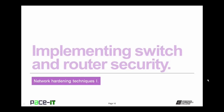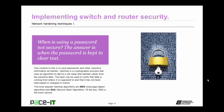Let's conclude with implementing switch and router security. When is using a password not secure? When the password is kept in clear text. One solution is to save passwords and other sensitive information as hashes. Hashing is a cryptographic process that uses an algorithm to derive a set value — the hashed value — from the sensitive data. The hash can be used to verify that data is coming from where it is supposed to and has not been intercepted or changed in transit. The most popular hashing algorithms are MD5 and SHA — of the two, SHA is the more secure.